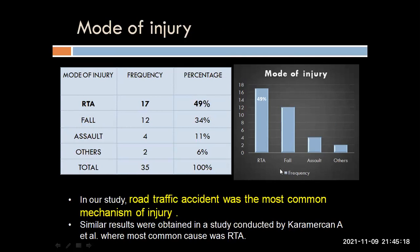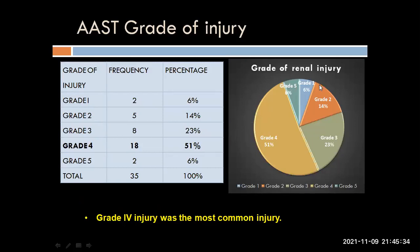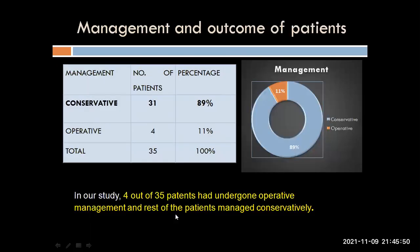When looking at the mode of injury, road traffic accidents comprised the majority of cases — nearly around 49%, that is around half the cases — followed by fall and assault. Coming to the grading of injury, we can see that nearly half the cases are grade 4 injuries, followed by grade 3 and grade 2 injury. Grade 1 and grade 5 injuries were minimally observed. Nearly 89%, that is 90% of the cases, have been managed conservatively and only a small proportion of the patients were taken up for surgery.